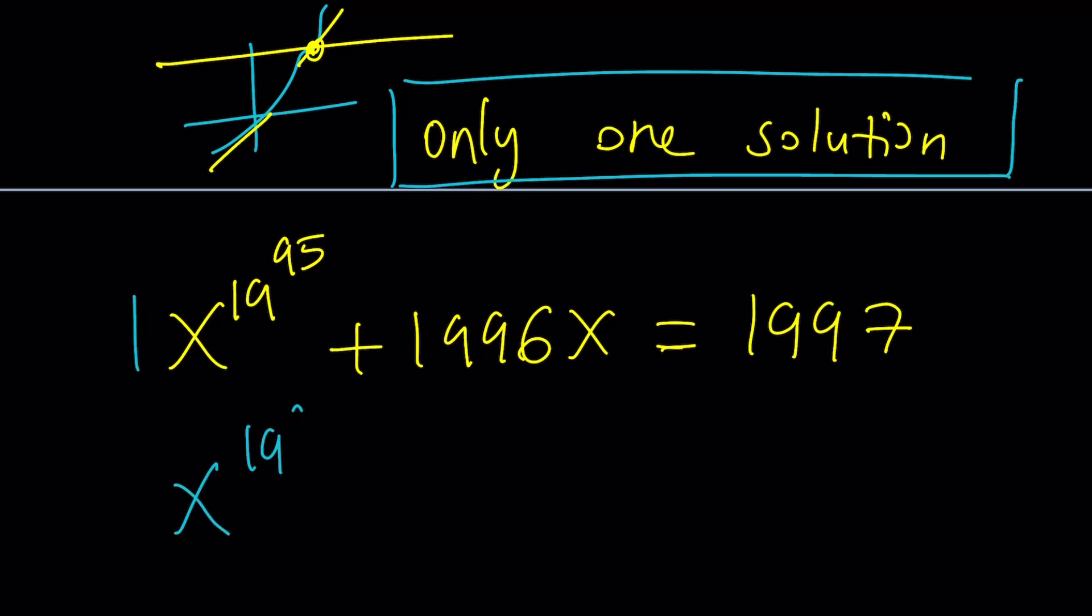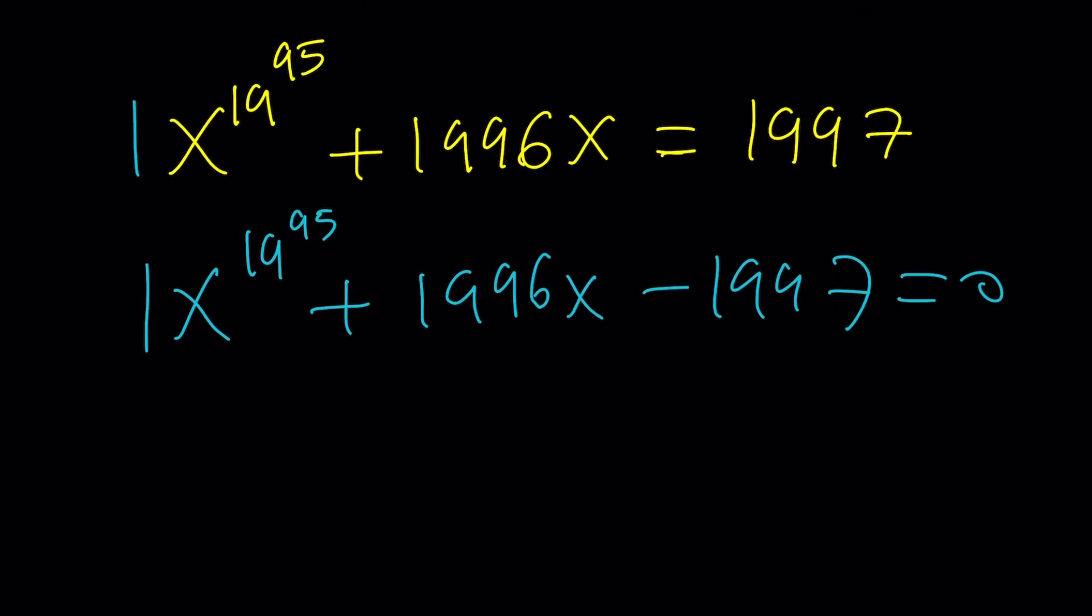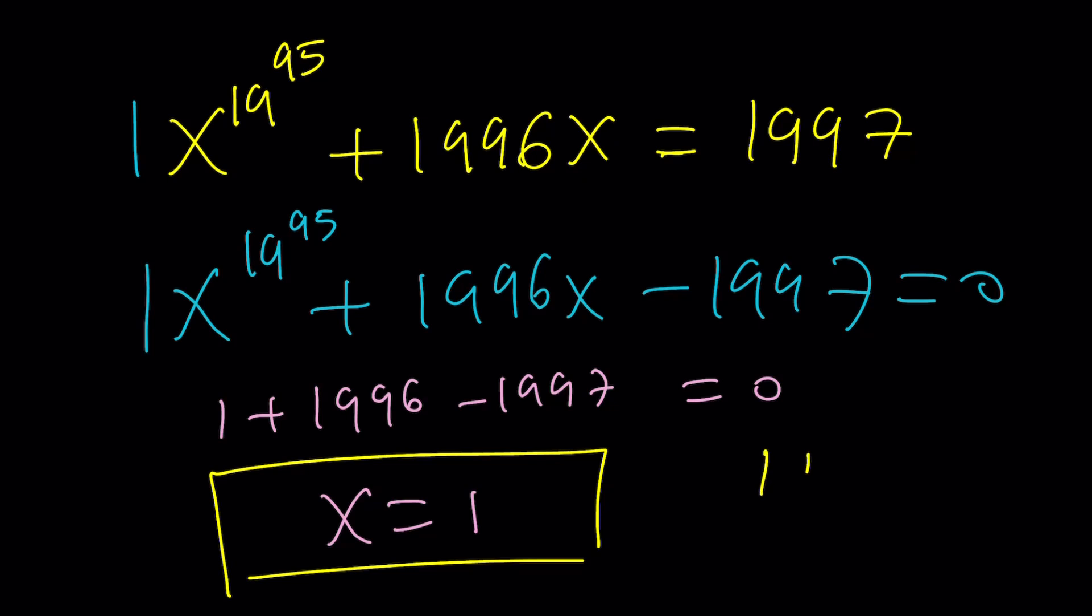Yes, you can guess it because x equals one works. The reason behind that is if you look at the sum of the coefficients of this polynomial—let me write it as a full polynomial—check the sum of the coefficients all the time. One plus 1996 minus 1997 equals zero, which means x equals one is a solution, which means x equals one is the only solution. We got it.